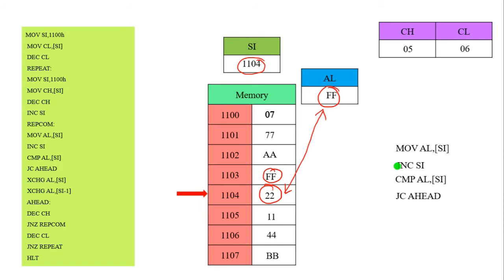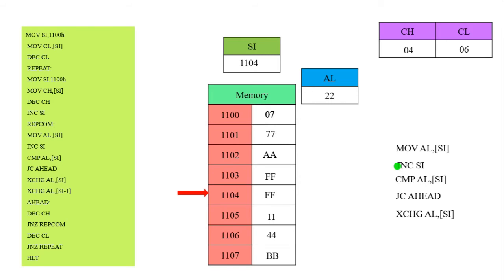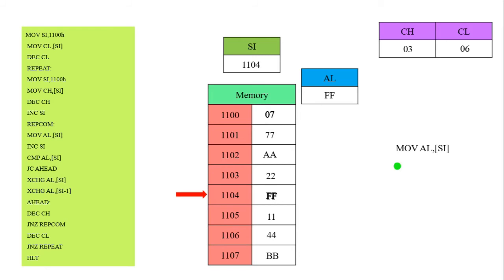We compare, and the carry flag value becomes set. If the carry flag value becomes set, we exchange the data — this data is replaced in the memory location. We perform XCHG AL, [SI-1] again. We decrement the CH value — now it becomes 03. Again re-comparison is performed. The SI value becomes 1104, which contains FF. This FF value is moved into AL. Then increment SI — value becomes 1105, which contains 11.